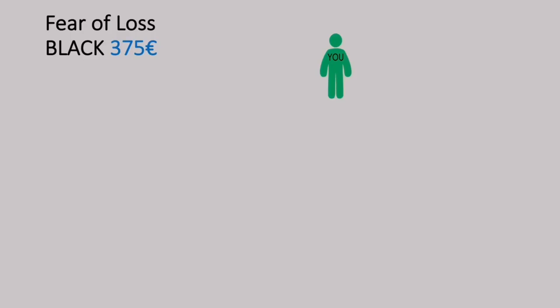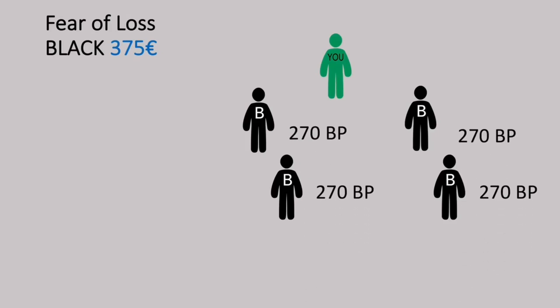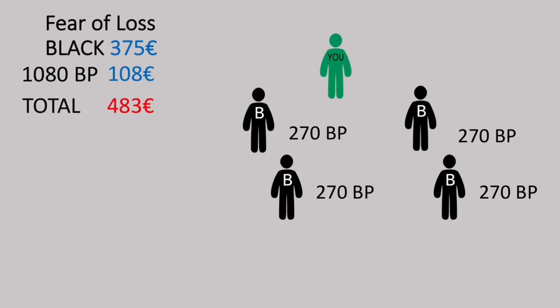Fear of Loss with the black package: this is you — you invite 2 black packages on your left and 2 black packages on your right. Each black package gets 270 binary points, with a total of 1,080 binary points, or 108 euros. Adding the 375 euros Fear of Loss bonus, you get a total of 483 euros.